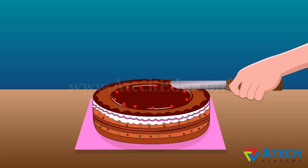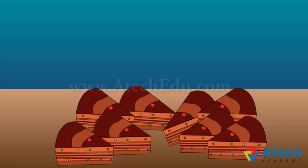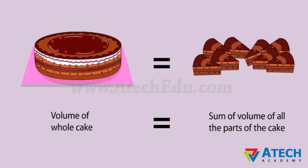Let us consider this cake. We cut this cake into different parts for distribution. We shall understand that the volumes of the pieces of cake are part of the volume of the whole cake. From this, we can say that the sum of the volumes of all the parts of the cake is equal to the volume of the whole cake.